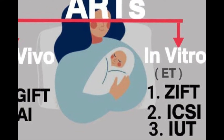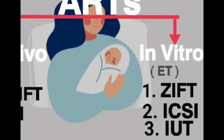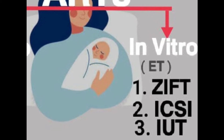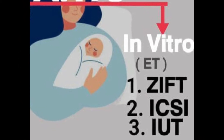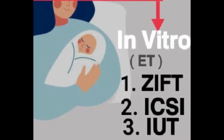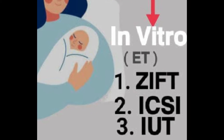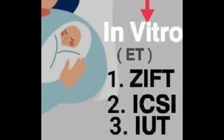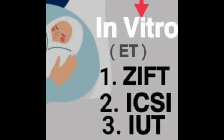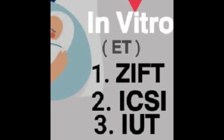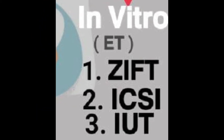In vitro fertilization is followed by embryo transfer (ET). There are three methods within IVF: ZIFT — zygote intrafallopian transfer; IUT — intrauterine transfer; and ICSI — intracytoplasmic sperm injection.